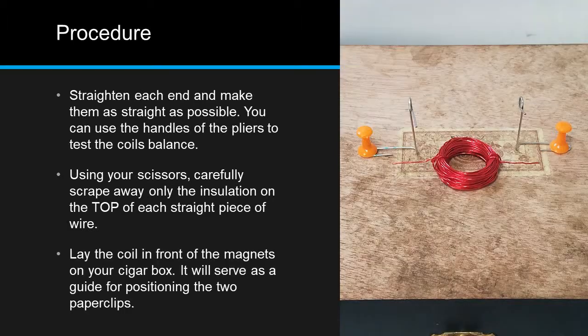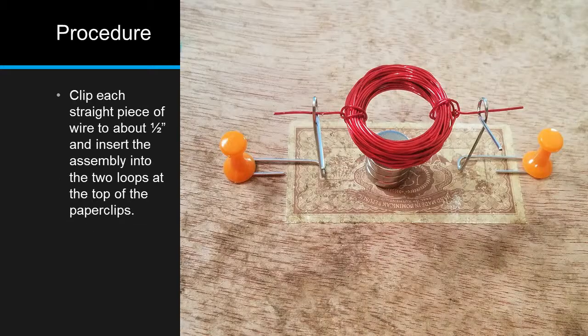Lay the coil in front of the magnets on your cigar box. This will serve as a guide for positioning the two paper clips. Position each paper clip as shown, making sure that the loops at the top align with the areas of straight wire that have the insulation scraped off. Secure each paper clip with the push pins. Clip each straight piece of wire to about a half inch, and insert the entire assembly into the two loops at the top of the paper clips.